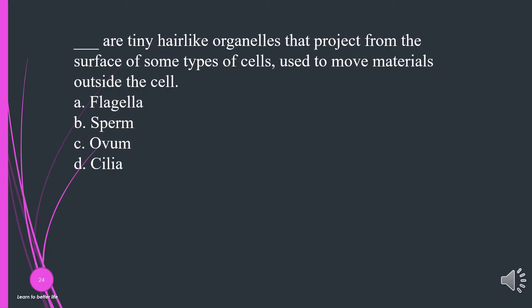What are tiny hair-like organelles that project from the surface of some types of cells, used to move materials outside the cell? A. Flagella. B. Sperm. C. Ovum. D. Cilia. The answer is D, cilia.